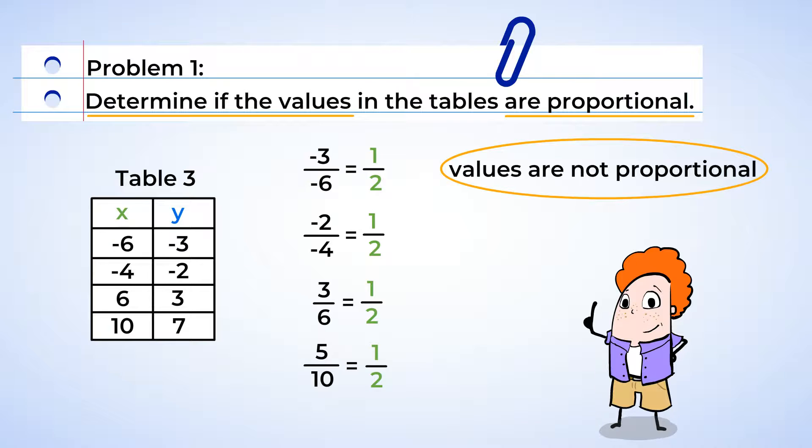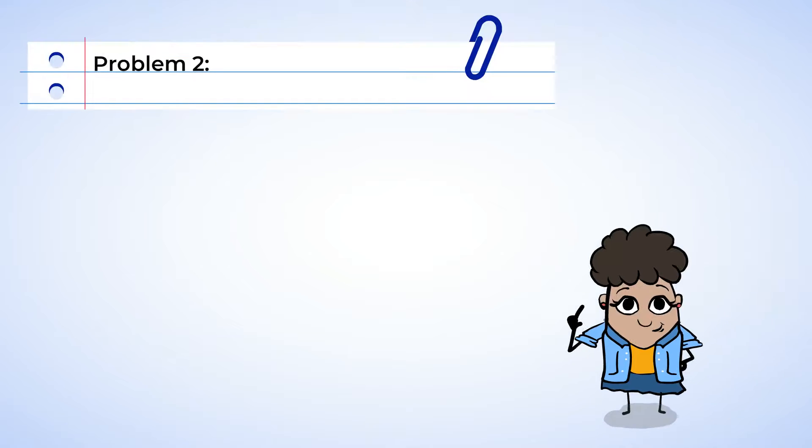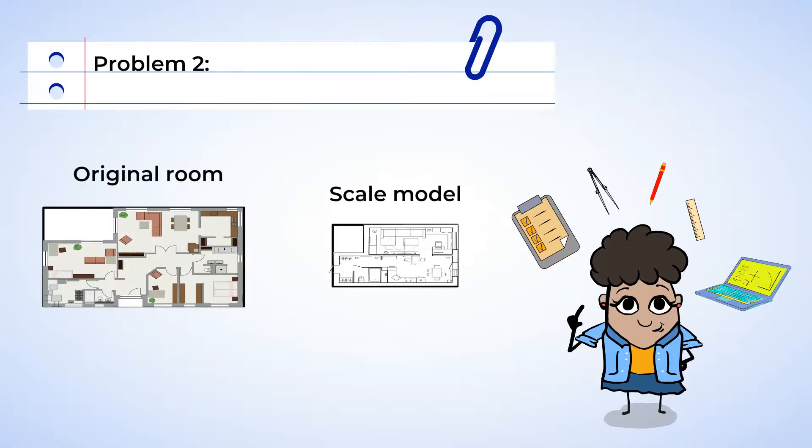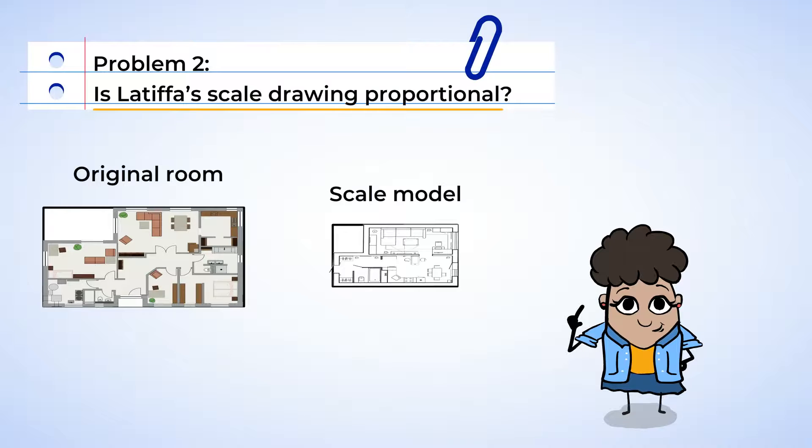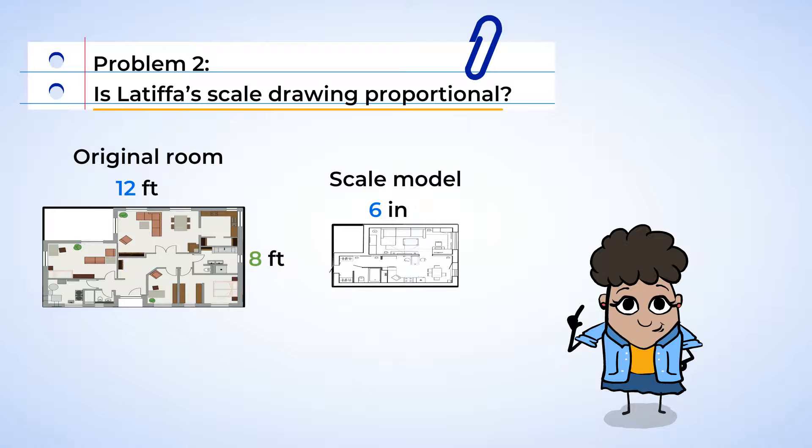Let's see how proportions are helpful to Latifa. Latifa is learning about architecture. She decided to make scale drawings of some of the buildings that she learned about. Is her scale drawing proportional to the original structure? The original room in a building is 12 feet long. The scale model has the same room at 6 inches in length. The width of the room is 8 feet long and the scale model has a width of 4 inches.